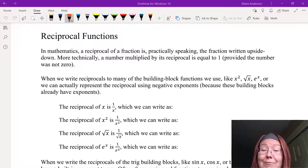When we write reciprocals to many of the building block functions we use, like x, x squared, square root of x, e to the x, we can actually represent the reciprocal using negative exponents, because these building blocks already have exponents.